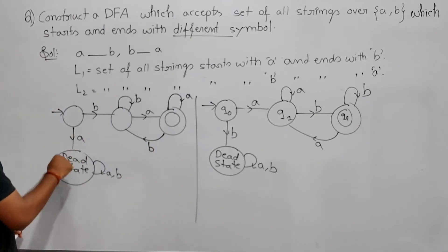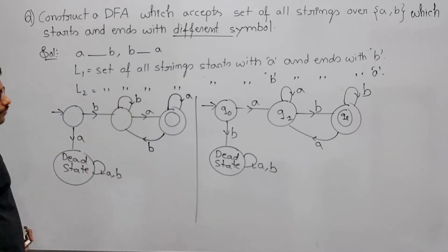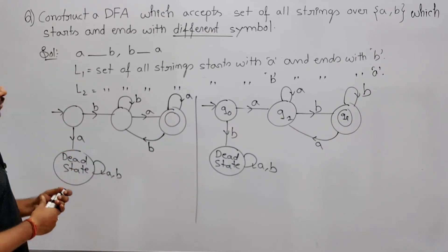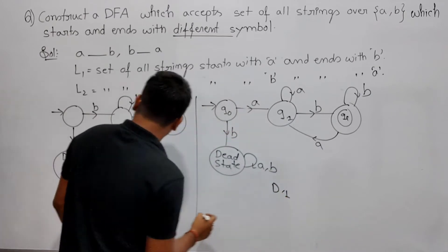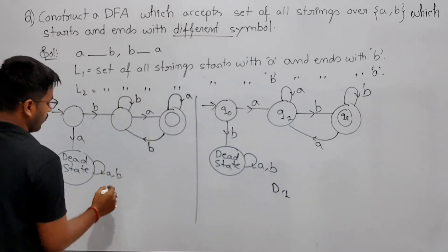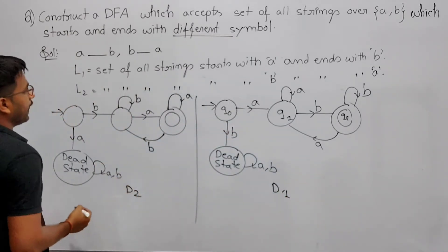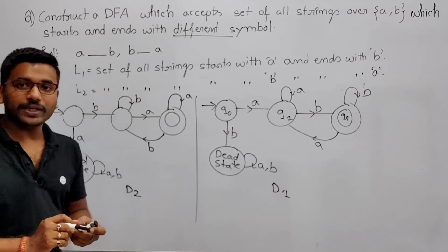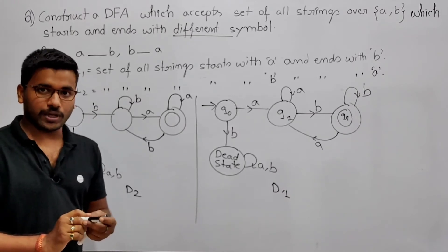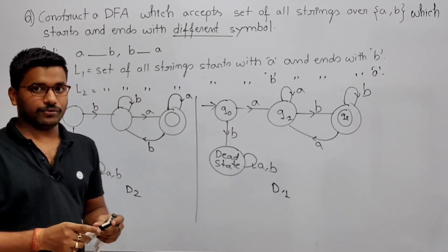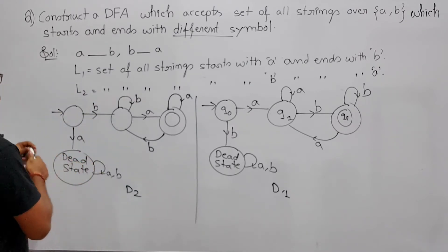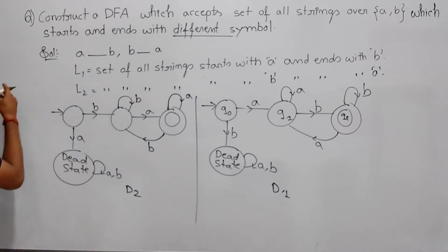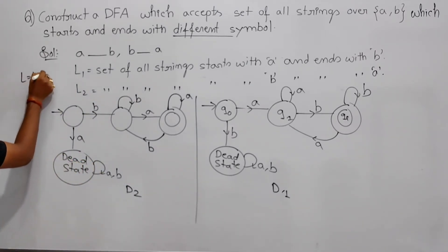Now, for L1 you have constructed D1, and for L2 you have constructed D2. Our language L is D1 union D2. So L is the union — the set of strings that start with a and end with b, union the set of strings that start with b and end with a.